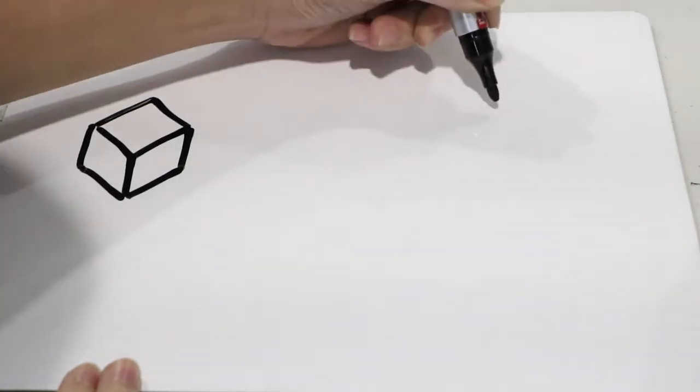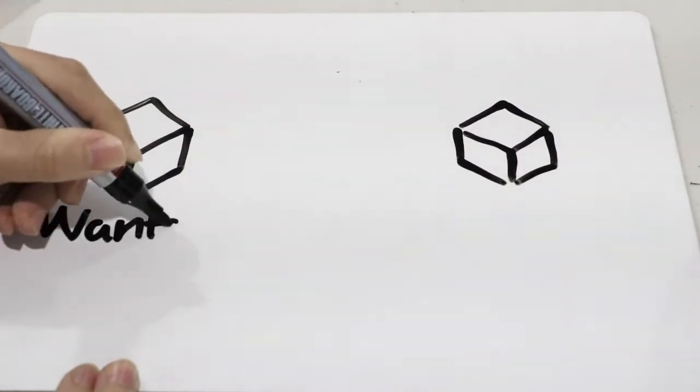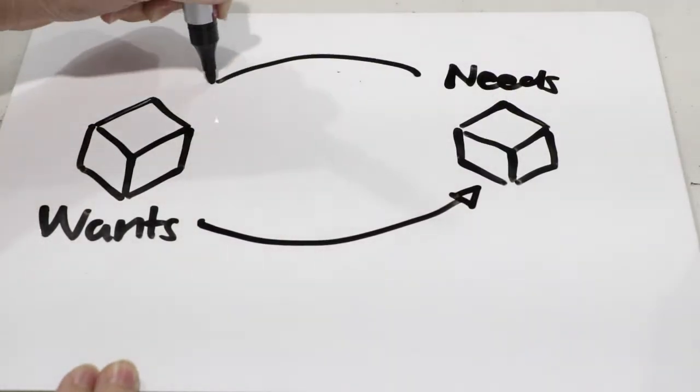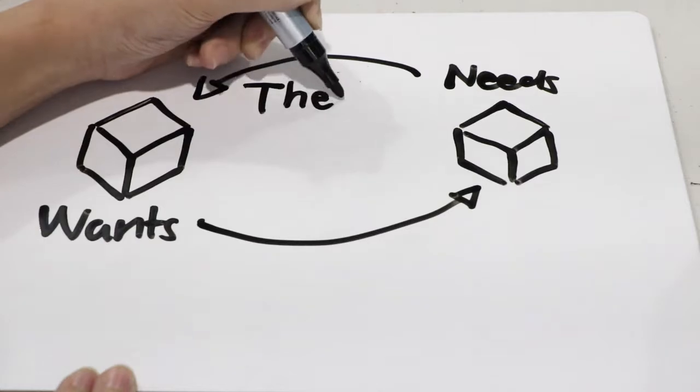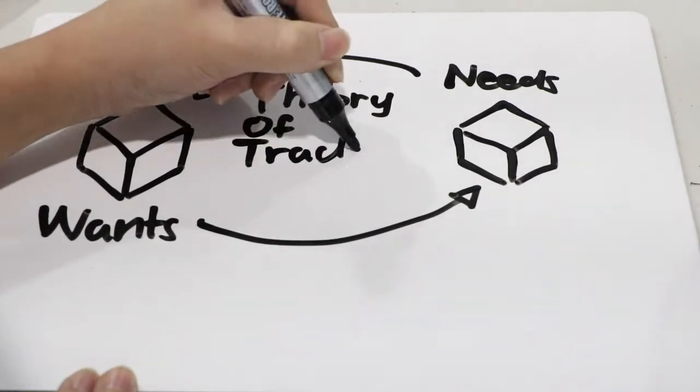The theory of trade can also be applied to this. What's the theory of trade? The theory of trade is when a country specializes in a good, which can be a want, and trades it with another country that specializes in a different good, which is a need.